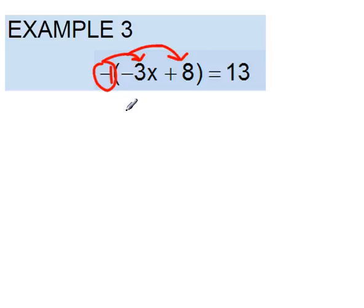So negative 1 times a negative 3x will actually give us a positive 3x, and a negative 1 times a positive 8 will give us a negative 8. So we have 3x minus 8 equals 13.